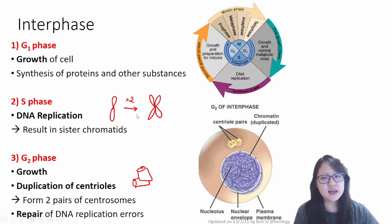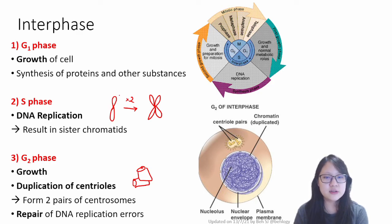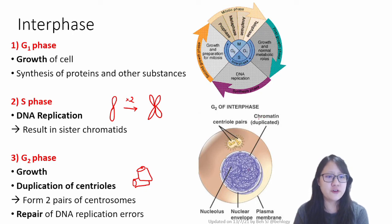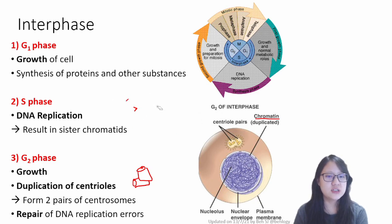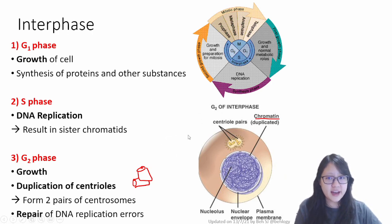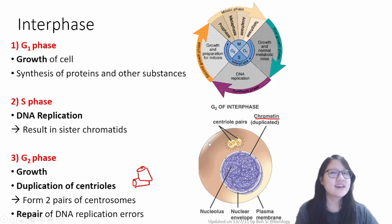One more note: in interphase, even though chromosomes are sometimes drawn in a condensed form, they are actually not visible in that condensed form yet. It's more like a bowl of spaghetti — the chromosomes are in the form of chromatin and are not visible under the microscope. They're not condensed just yet. With that, we are done with interphase and are ready to go to mitosis, which we'll cover in the next video. Bye.